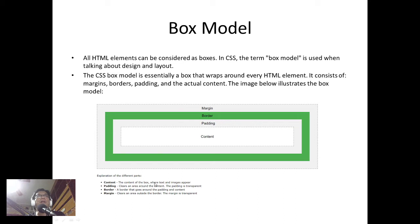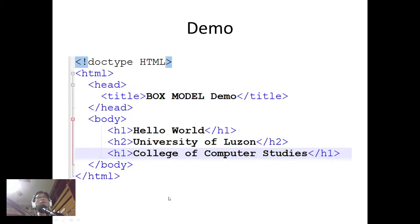The content is where text and images appear. Outside the content is the padding, which clears an area around the content. Then we have the border, which goes around the padding and content. Outside the border is the margin, which clears an area outside the border. The margin is also transparent.